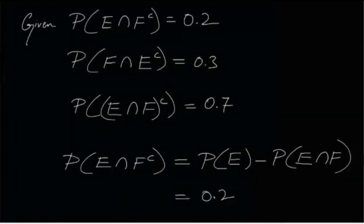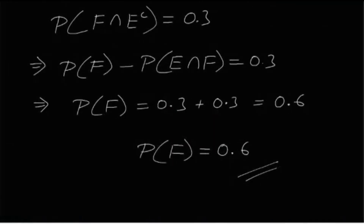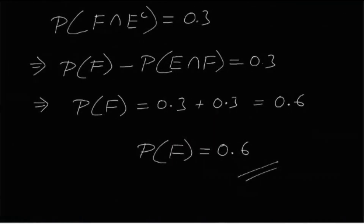This was a very easy problem — you just need to use the algebra of sets, know how to write events in different forms, and apply De Morgan's theorems. Now let's move on to question number 5.